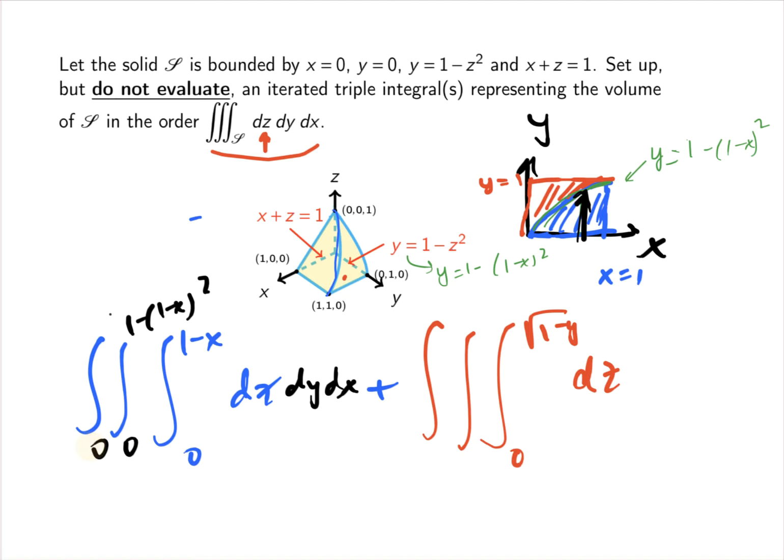And then for the red part, start at 1 minus (1 minus x)², go all the way to 1, and x goes from 0 to 1.